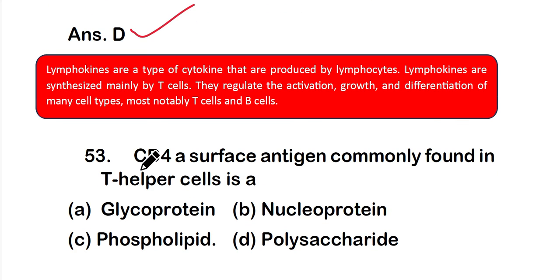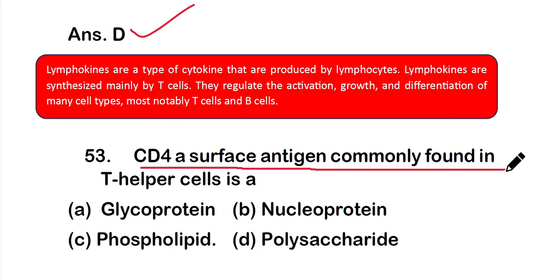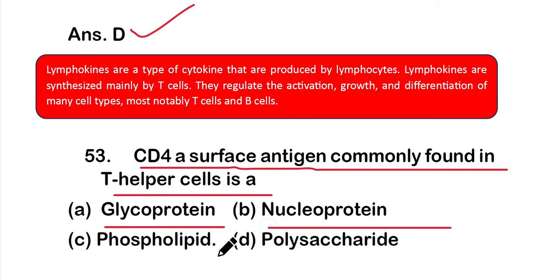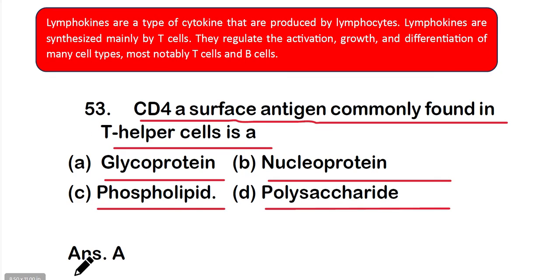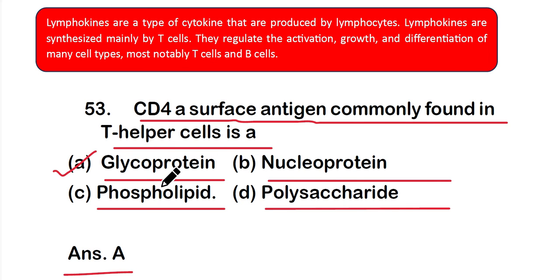Question 53: CD4+, a surface antigen commonly found in T helper cells, is which type of molecule — option A glycoprotein, option B nucleoprotein, option C phospholipid, or option D polysaccharides? The right answer is option A — glycoprotein. The CD4+ surface antigen found mainly on T helper cells is a glycoprotein.